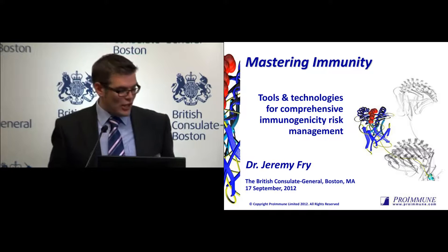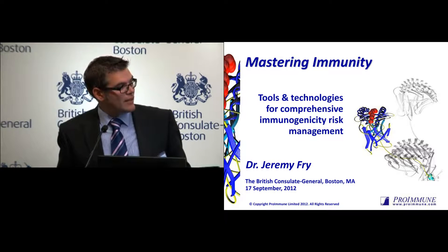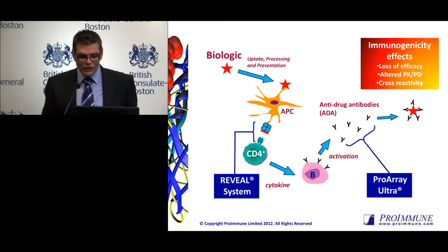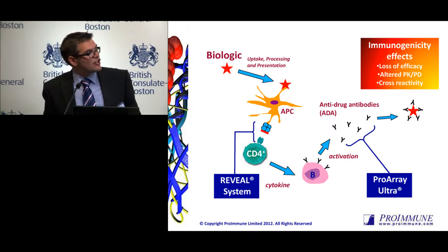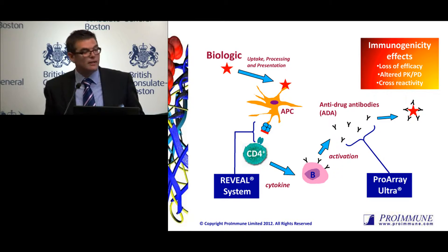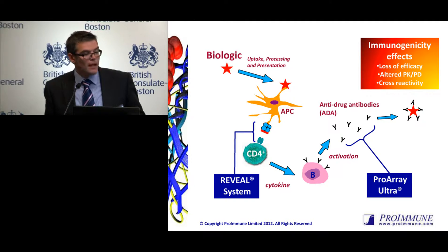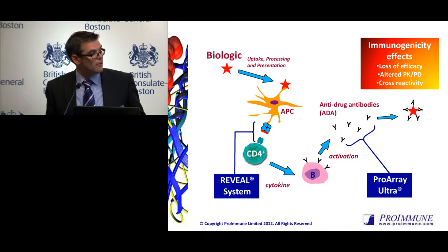I won't spend too much time on this introductory slide. Any cartoon is an oversimplification of the biology, but essentially a biologic molecule, when it's taken up by an antigen-presenting cell, is naturally processed and presented. Components of that protein are then presented in the context of MHC molecules — here MHC class 2 — presenting peptides to a CD4-positive helper T cell. It's this specific recognition of a linear T cell epitope in the context of MHC via a helper T cell which can then activate the immune response.